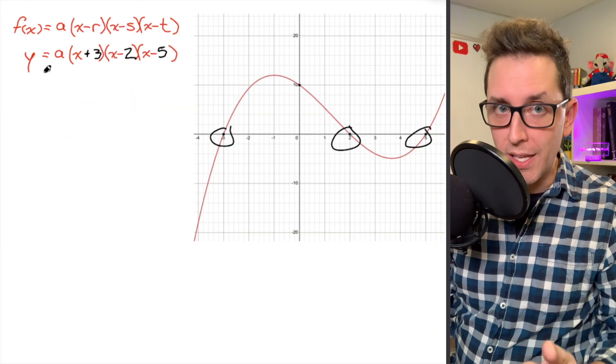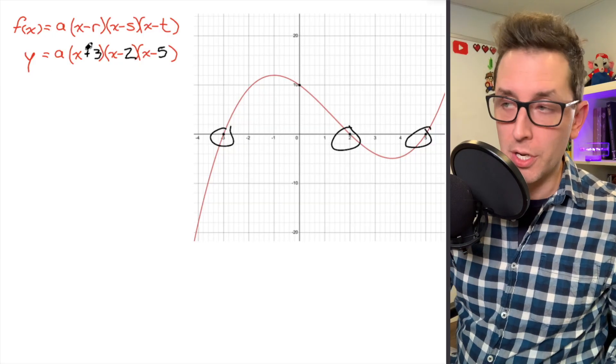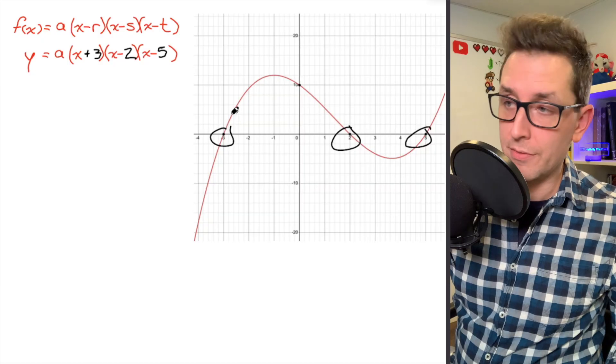Now, in the equation of any function that relates x and y, we can think of x and y as just any point on that function. If I take a look at this polynomial function, there's many points that fall on that function, right? They're found all along the curve.